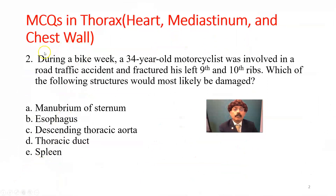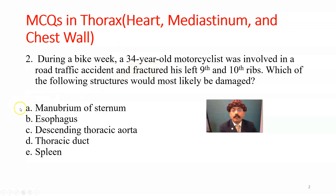Question number two: during bike week, a 34-year-old motorcyclist was involved in a road traffic accident and fractured his left 9th and 10th ribs. Which of the following structures would most likely be damaged? Choices are: A) manubrium of sternum, B) esophagus, C) descending thoracic aorta, D) thoracic duct, E) spleen.